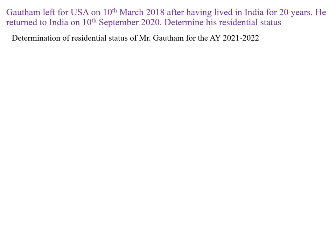After giving the title, you have to write down the previous year you are working for. The previous year for this problem is 1-4-2020 to 31-3-2021. After writing the previous year, you have to see whether this individual — Gautam — will come under the exempted category. There are three types of individuals exempted from the second basic condition: a person who left India for employment, a person who left India as a member of an Indian ship, and a person of Indian origin. In this question, it is not mentioned that Gautam left India for employment or as a member of an Indian ship, nor is he a person of Indian origin. So the second basic condition will apply for him.